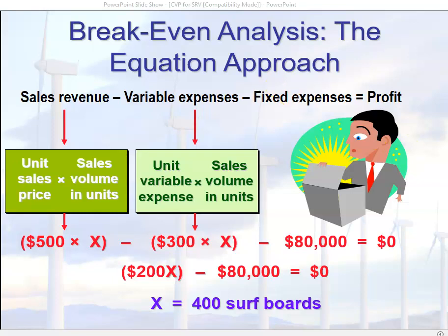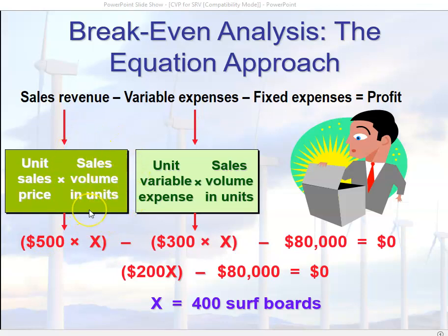Here we have an example where we're trying to determine break-even analysis. We have a product — surfboards — being sold for $500 each. We need to determine how many surfboards we need to sell to break even. Our variable cost per unit is $300, and we also have fixed expenses of $80,000.